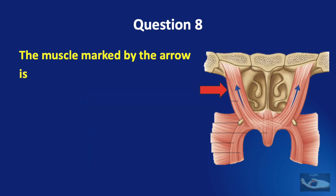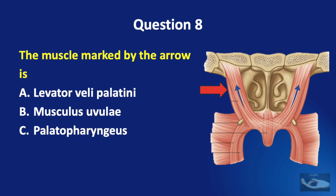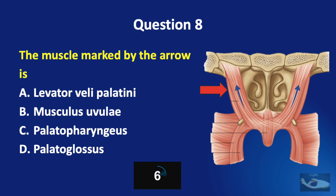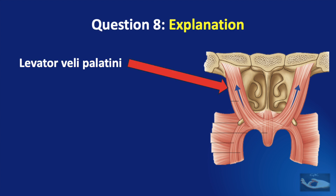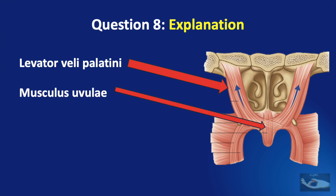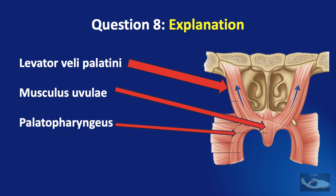Question number 8. The muscle marked by the arrow is: levator veli palatini, musculus uvulae, palatopharyngeus, or palatoglossus. The correct answer is levator veli palatini. The image shows the levator veli palatini muscle, the musculus uvulae, the palatopharyngeus, and the palatoglossus.